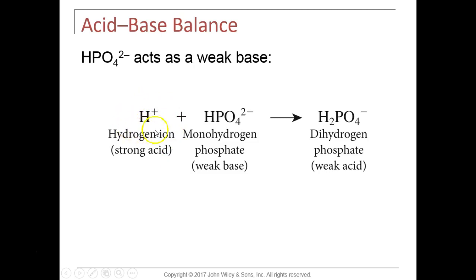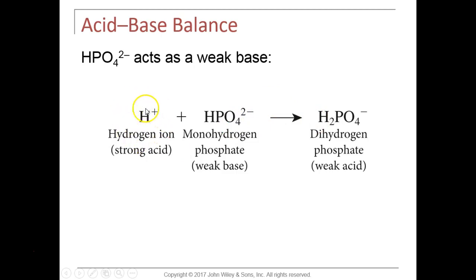The diaphragm and external intercostal muscles contract more forcefully and more often, so we start to breathe deeper and faster. As we breathe more deeply and faster, we exhale out more CO2, running the reaction in reverse and getting rid of acid. If we have too little CO2 in the blood we become basic. This negative feedback loop runs until blood pH returns to normal and we breathe normally again.